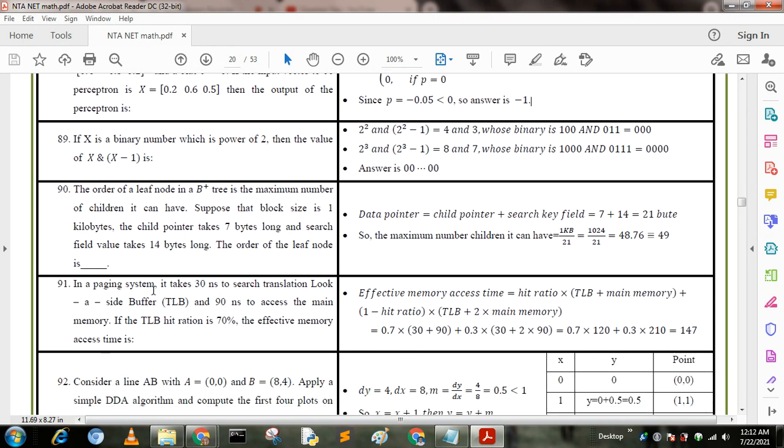Question 91: in a paging system, it takes 30 nanoseconds to search translation lookaside buffer TLB and 90 nanoseconds to access the main memory. If the TLB hit ratio is 70 percent, the effective memory access time is: effective memory access time equals hit ratio into TLB plus main memory plus 1 minus hit ratio into TLB plus 2 into main memory. So equals 0.7 into (30 plus 90) plus 0.3 into (30 plus 2 into 90). We put this value and we get the value 147. We use this formula and we get the answer.